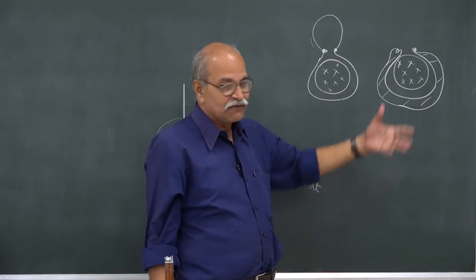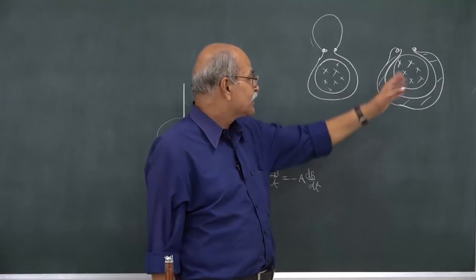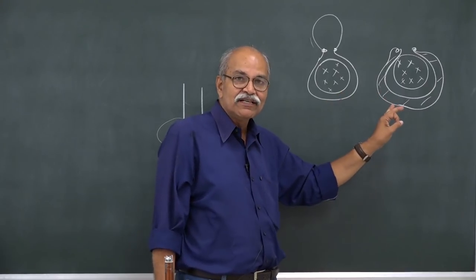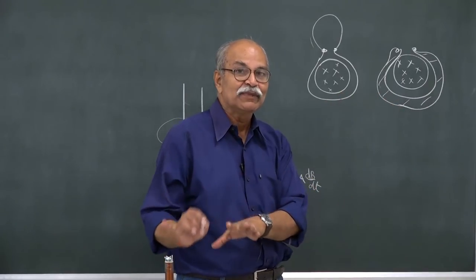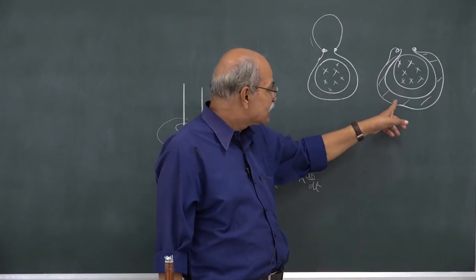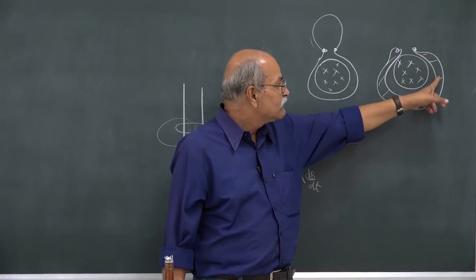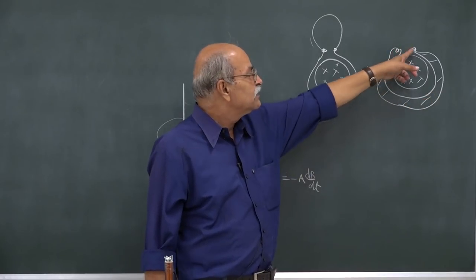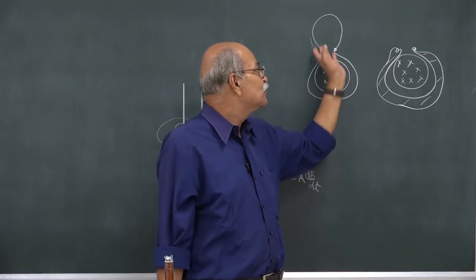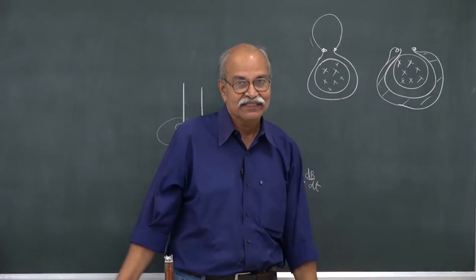Of course, our solenoids are finite, so some magnetic field will be there, so some small EMF can still be there. But the essential phenomena has been displayed: it depends on the area which is enclosed by the closed loop. If the loop is not closed, then you do not know what is the EMF. That depends on how you close the loop.